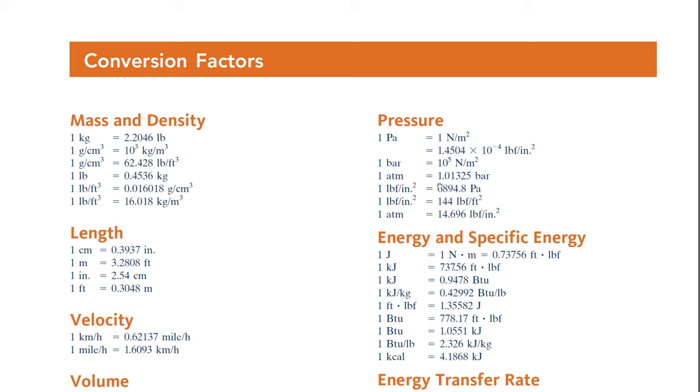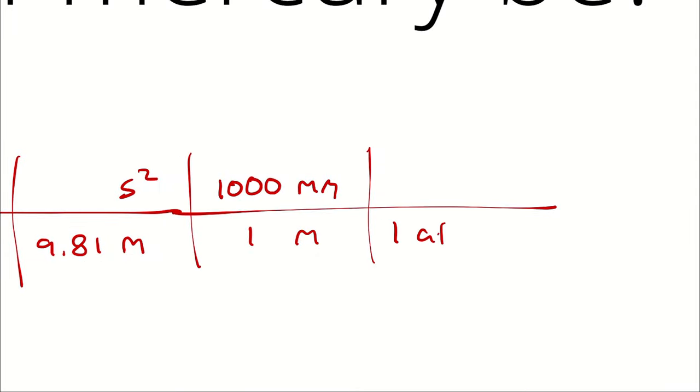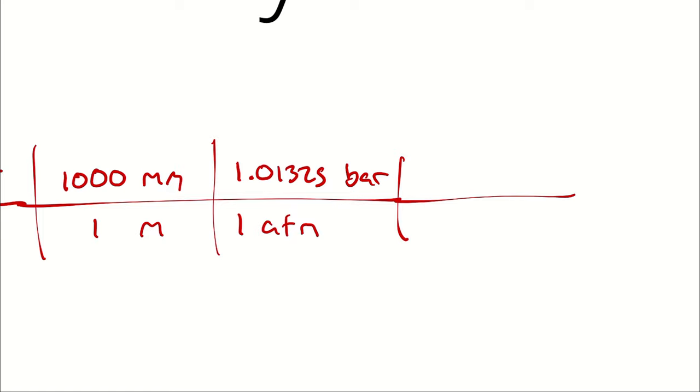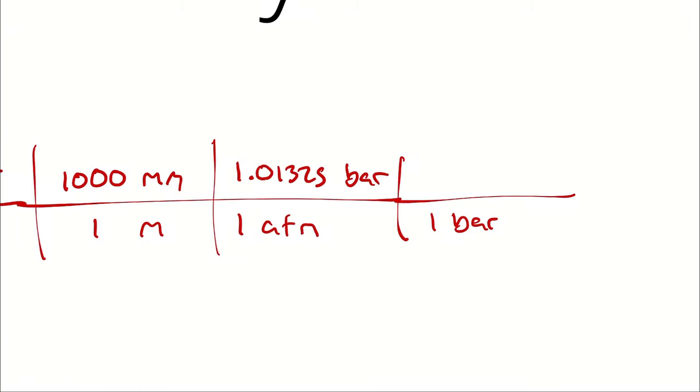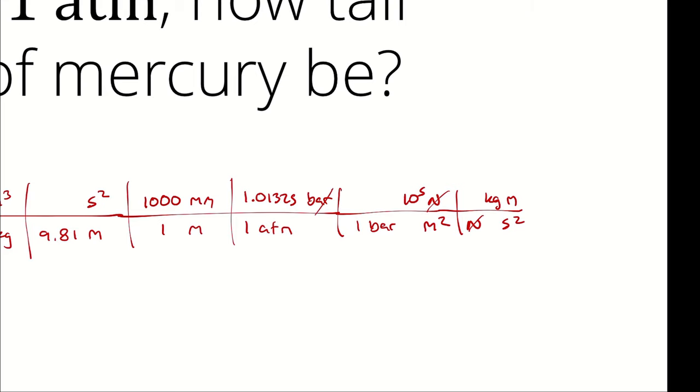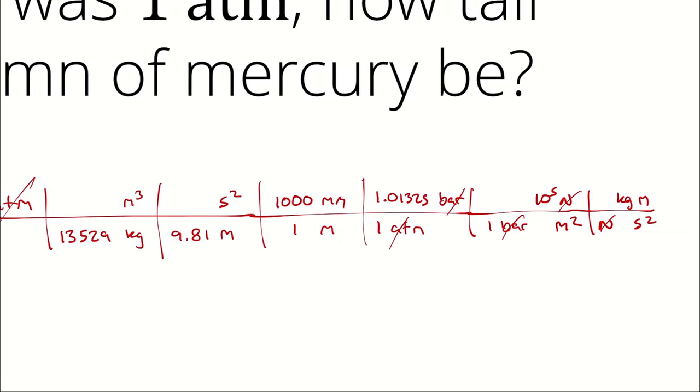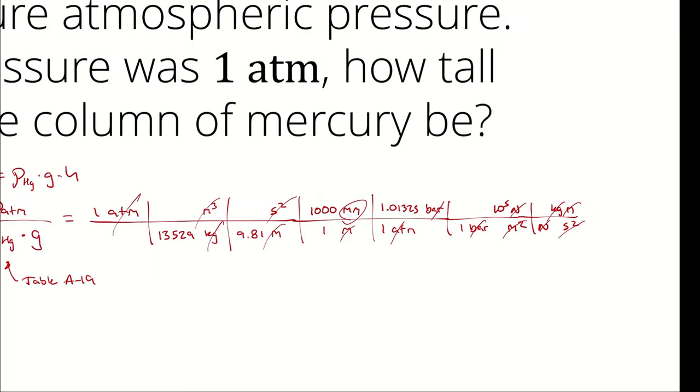And I will see that one atmosphere is equal to 1.01325 bar. And a bar is 10 to the fifth newtons per square meter. And I know a newton is a kilogram meter per second squared, at which point newton cancels newtons, bars cancels bars, atmosphere cancels atmospheres, kilograms cancels kilograms, second squared cancels second squared, square meters and meters and meters cancels cubic meters and meters, leaving me with an answer of millimeters.